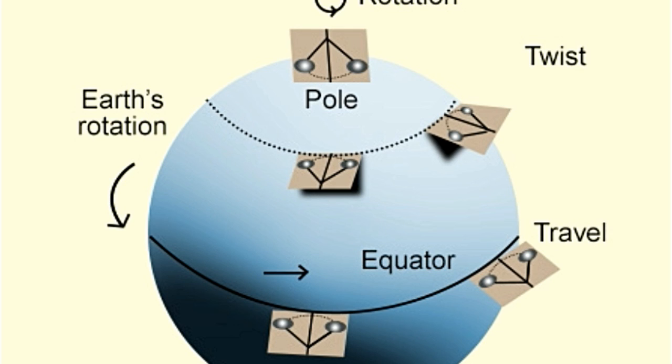Once this pendulum began oscillating, it was observed that the pendulum swings regularly change directions in the clockwise direction at the rate of approximately 11 degrees per hour completing a full circular rotation in 32.7 hours, thus proving that the earth rotates.